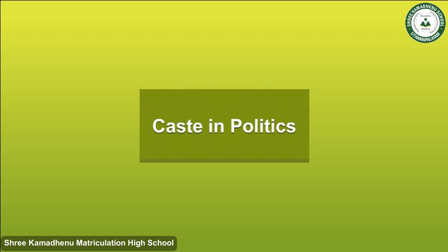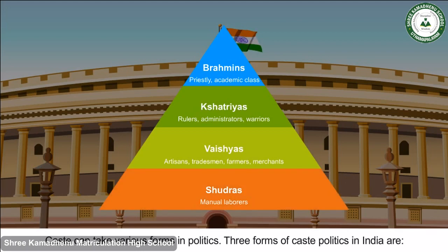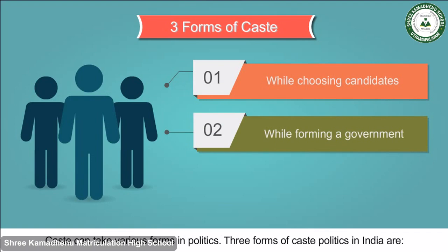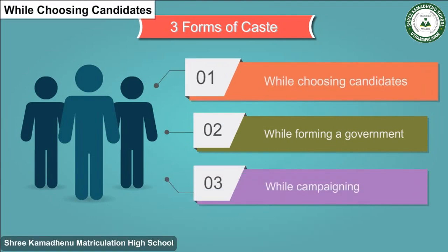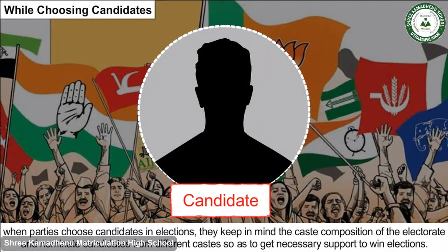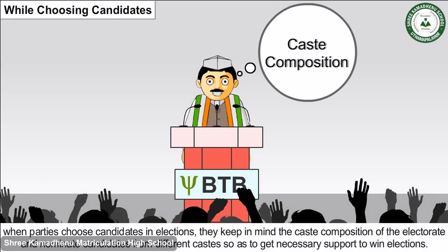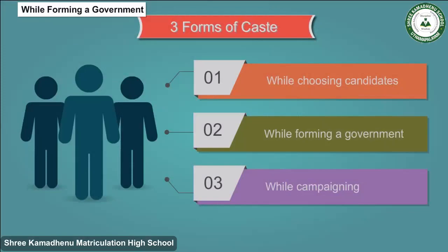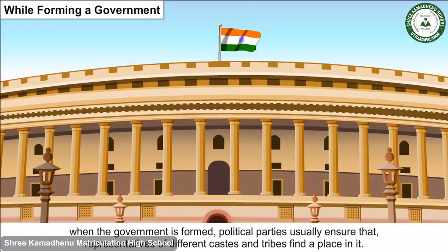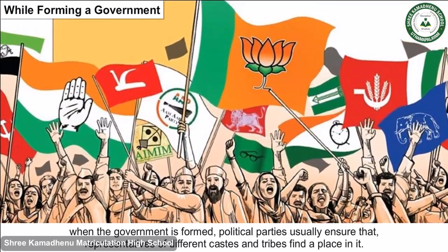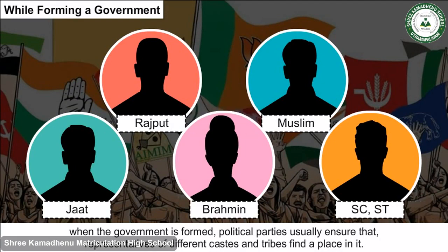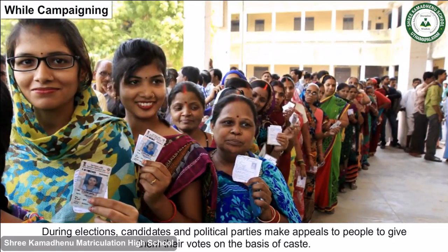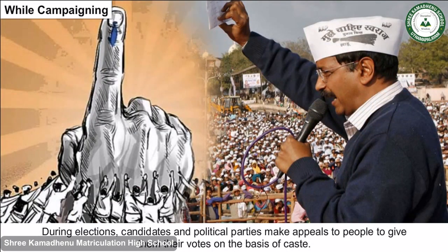Caste in Politics: Caste can take various forms in politics. Three key forms in India are: while choosing candidates, while forming a government, and while campaigning. When parties choose candidates in elections, they keep in mind the caste composition of the electorate and nominate candidates from different castes to gain the necessary support to win. When forming a government, political parties usually ensure that representatives of different castes and tribes find a place in it.